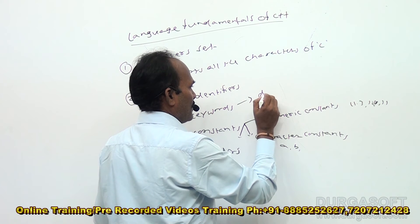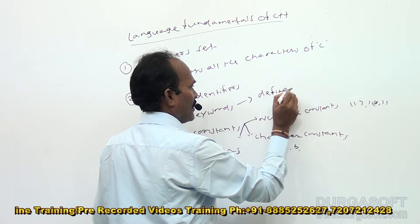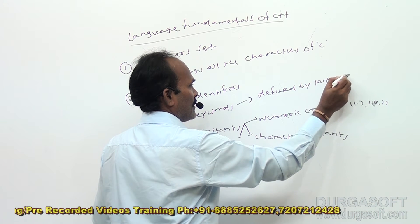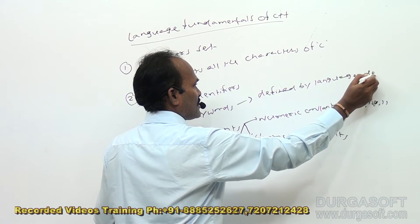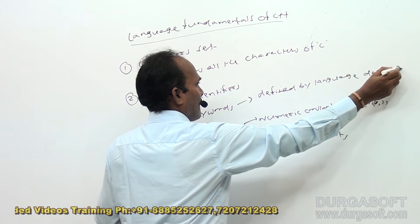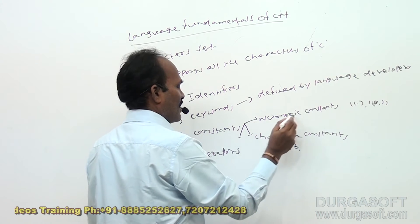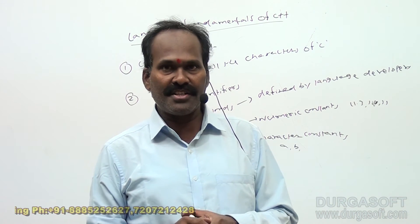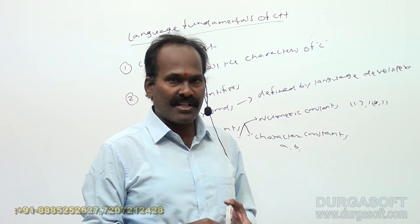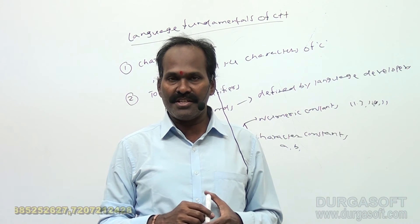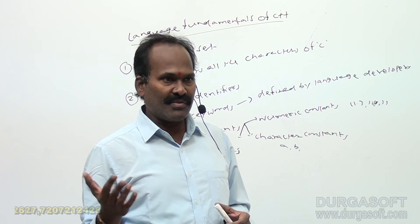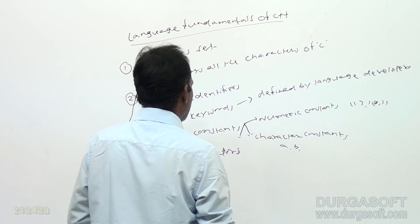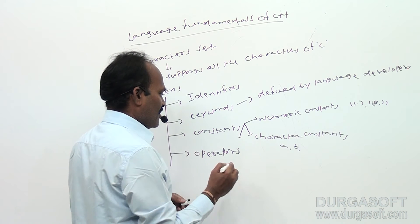Keywords are defined by language developers. Constants are fixed values — values which are not changed during the execution of a program. So any value which is not going to be changed during execution of a program is called a constant.